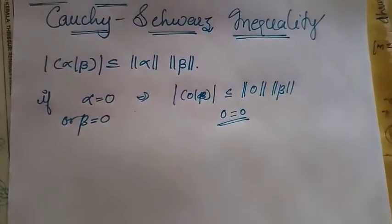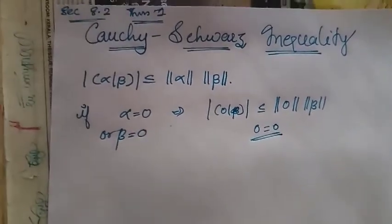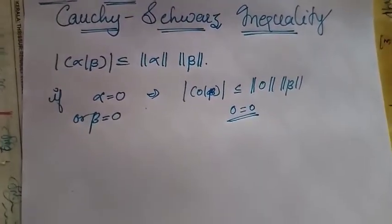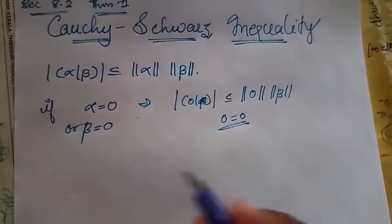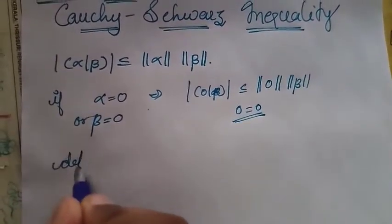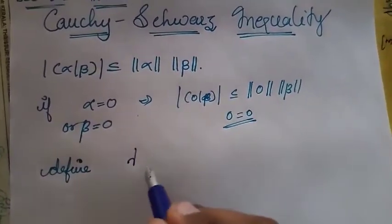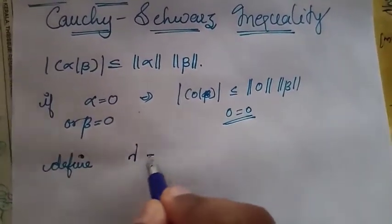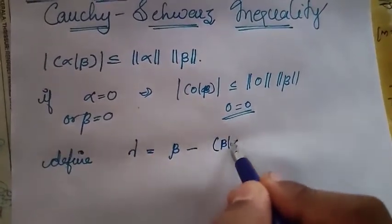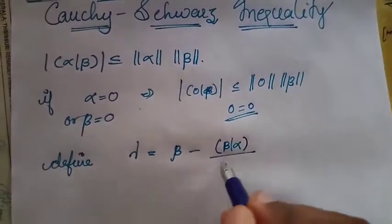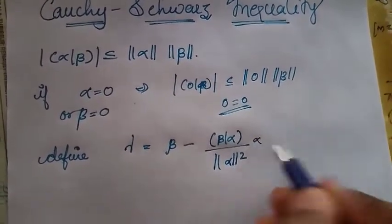Now, in the case where alpha is not zero — that is, alpha is non-zero — we define a function gamma. Gamma is defined as: γ = β − (⟨β, α⟩ / ‖α‖²) · α.